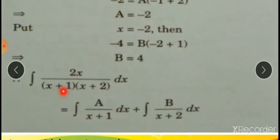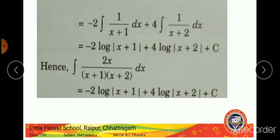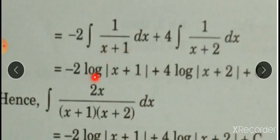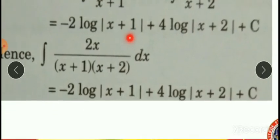So the integration of 2x upon (x+1)(x+2) is converted into partial fractions as: -2 integration of 1/(x+1) plus 4 integration of 1/(x+2). Integration of 1/(x+1) is log|x+1|, and integration of 1/(x+2) is log|x+2|. Plus arbitrary constant. Hence, this is our required integration.